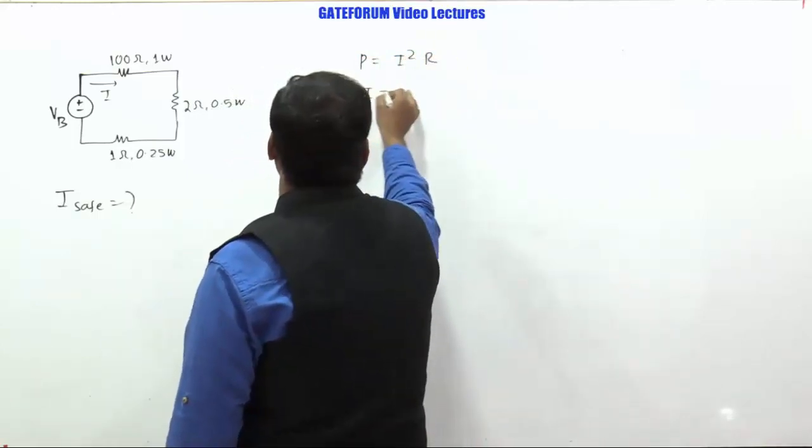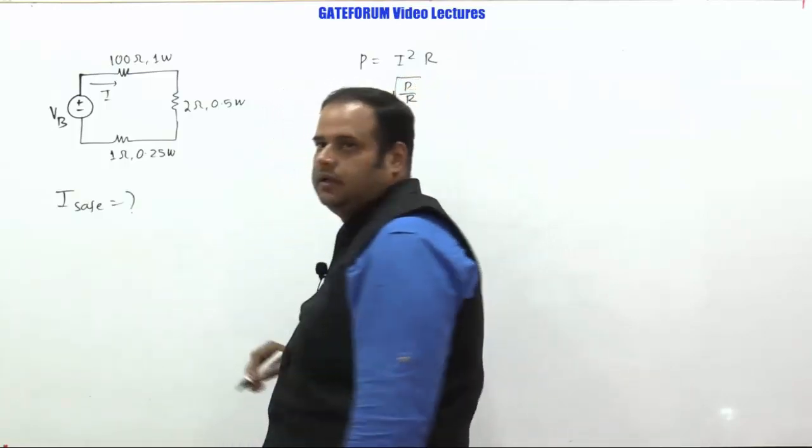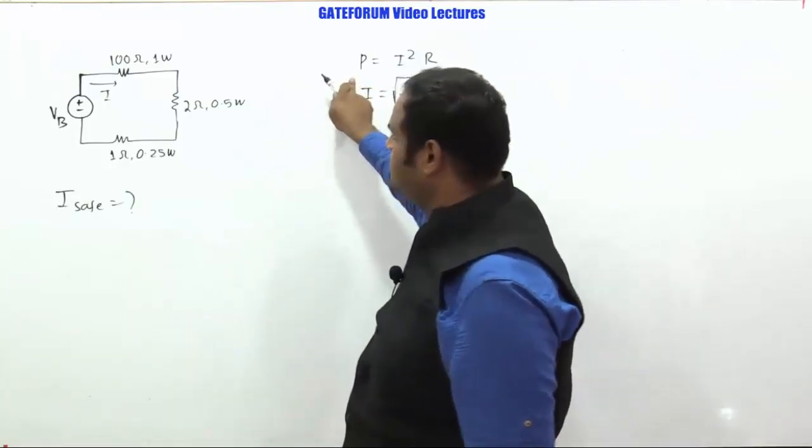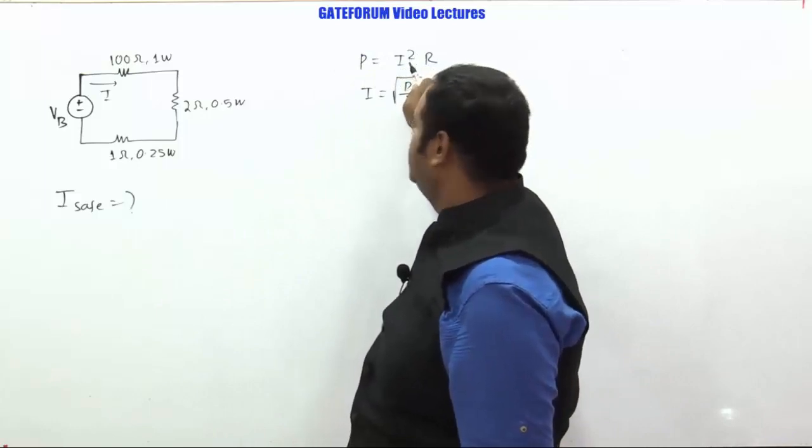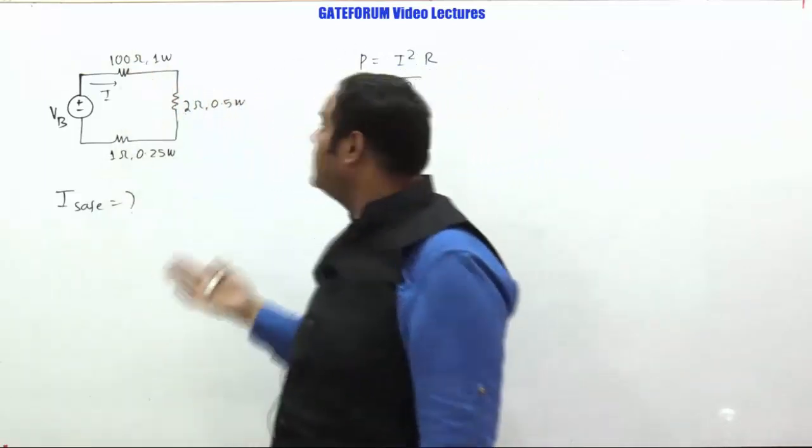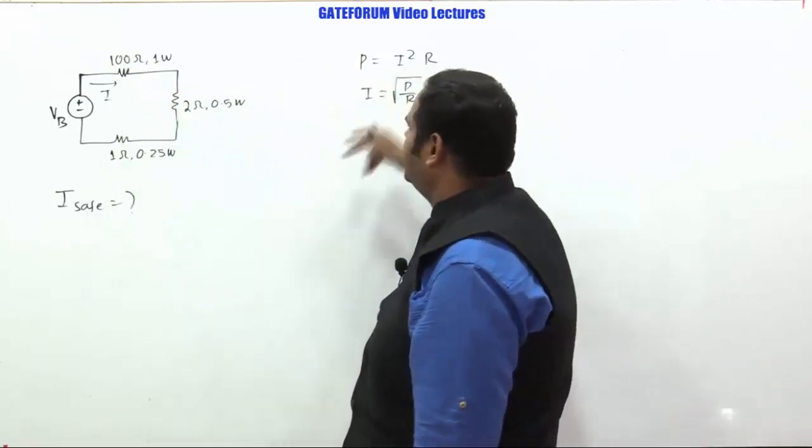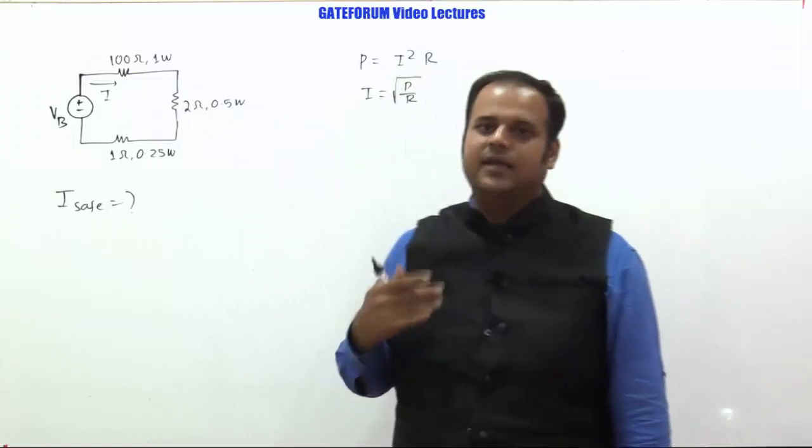So from here, we can get what is I. That would be square root of P by R. And because the P is fixed and R is also fixed, then I will also be fixed. So for P is fixed, R is fixed, obviously I will also be fixed. Because there will be a power rating, then obviously it also implies indirectly it is having a current rating as well.